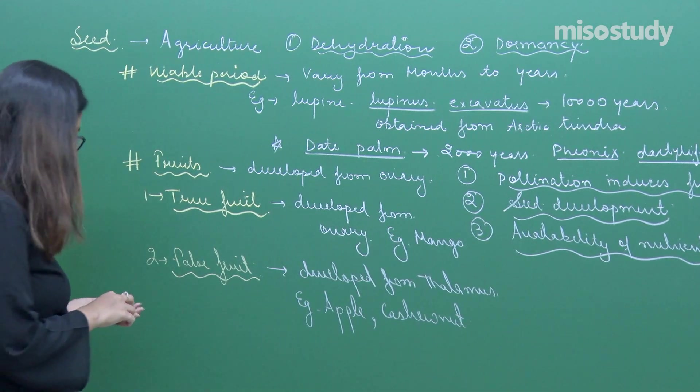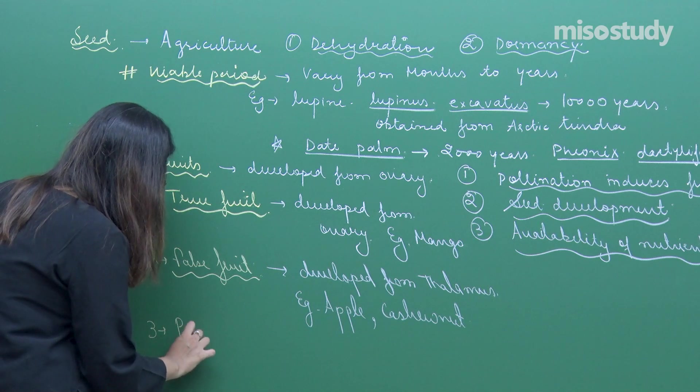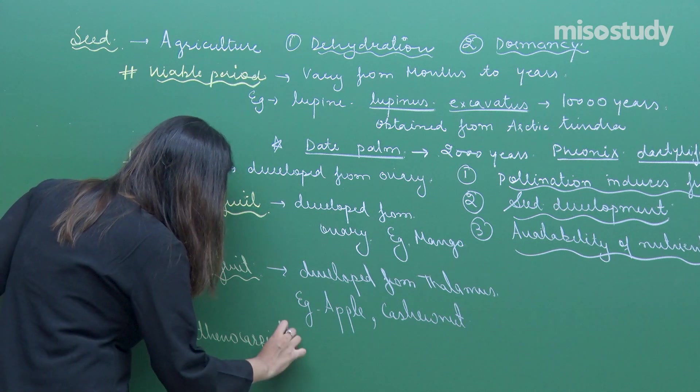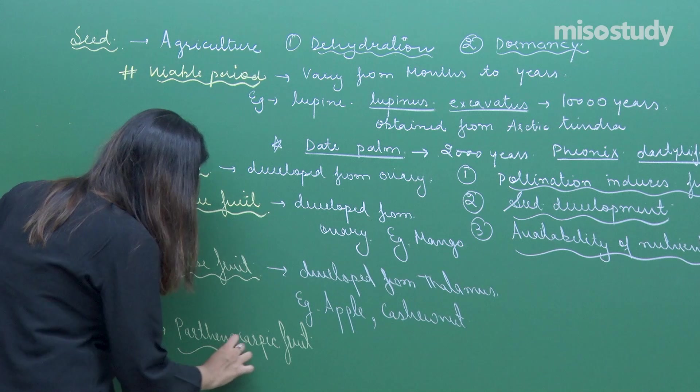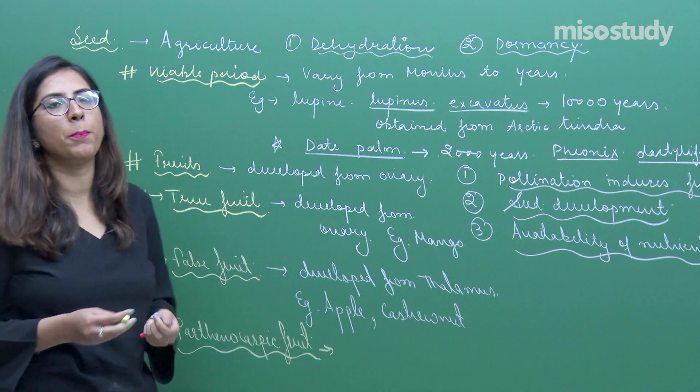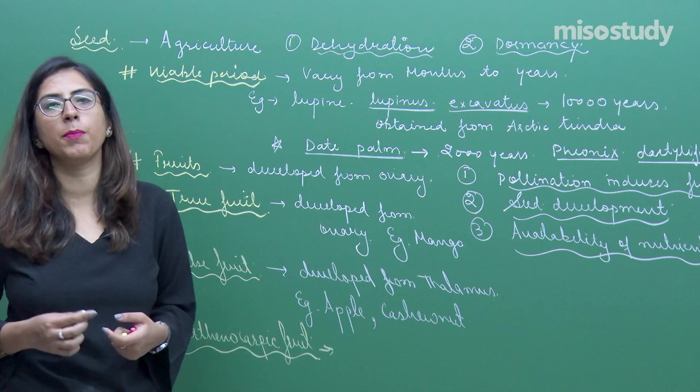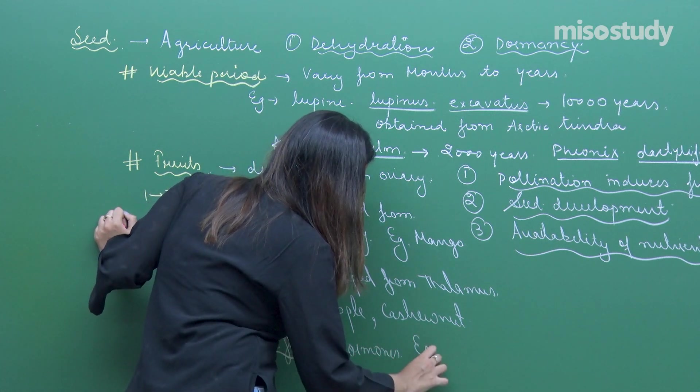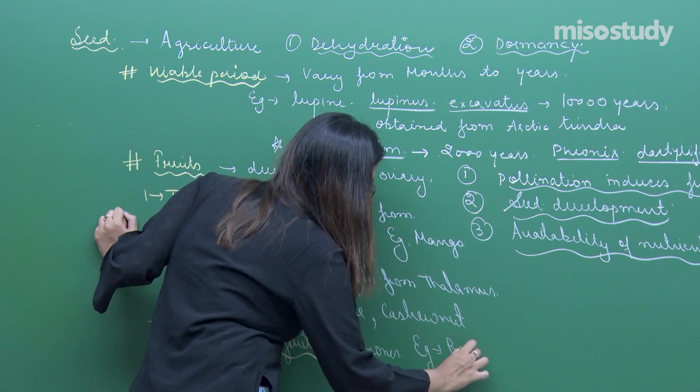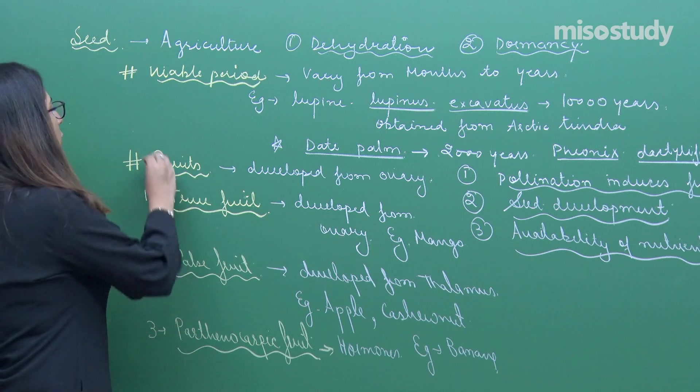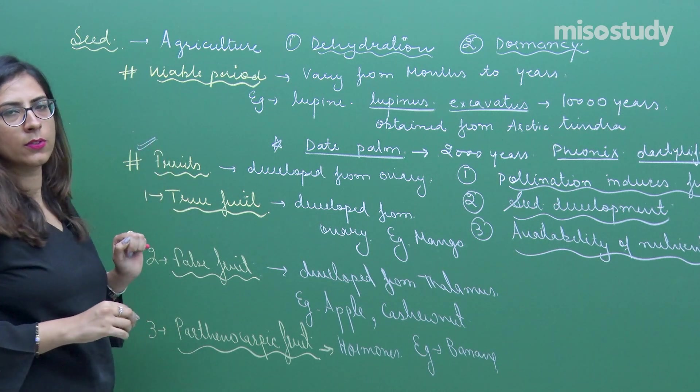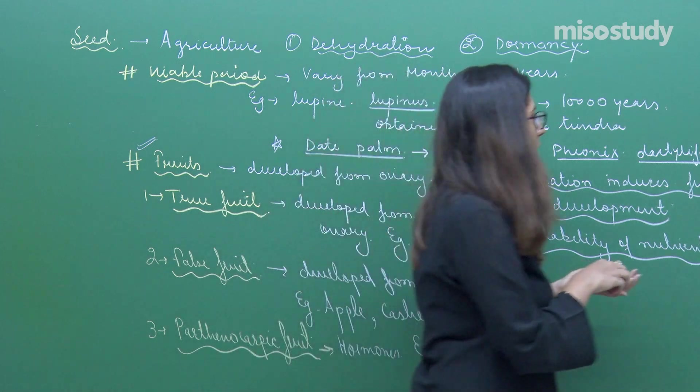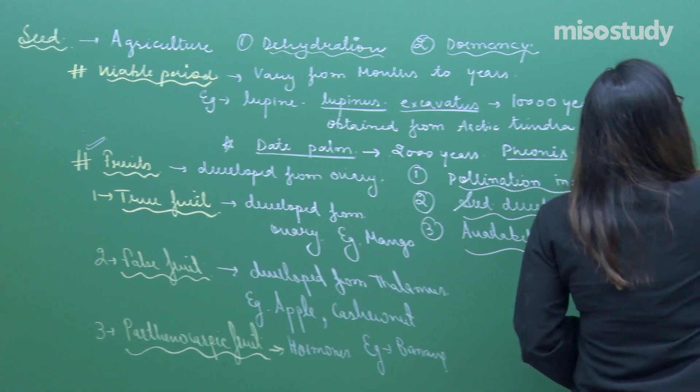Likewise we have a third category which are parthenocarpic fruits. These are fruits which are developed because of action of hormones. Hormones help in the development of such type of fruits. A very good example is banana. In your NCERT one very small topic is mentioned, that is apomixis. Let's talk about this last topic.